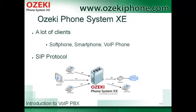Ozeki Phone System XE can operate a lot of client types. In the figure you can see that soft phones, VoIP phones, and traditional phones are also supported by this system. A soft phone is a software solution on your computer — you only have to install it and then you can use it with a microphone and a speaker. An IP phone can be a hardware-based phone that looks like a traditional phone but you use it via the IP network.